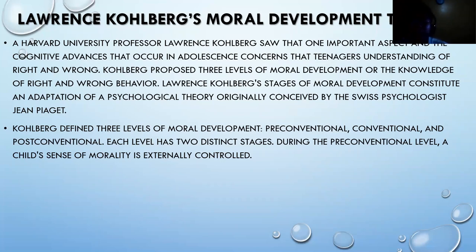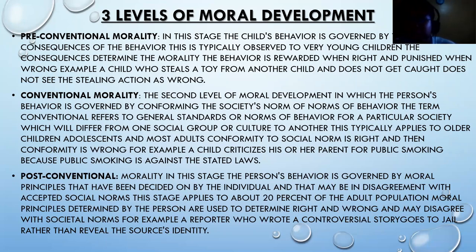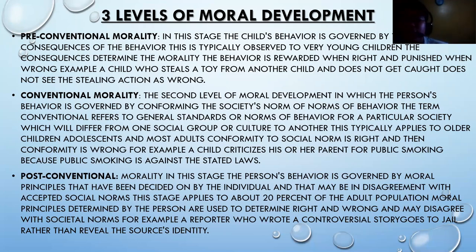During the pre-conventional level, a child's sense of morality is externally controlled. The child's behavior is governed by the consequences of behavior — typically observed in very young children. Children determine morality based on whether behavior is rewarded when right or punished when wrong. For example, a child who steals a toy from another child and does not get caught does not see the stealing as wrong because no one tells the child that stealing is bad.